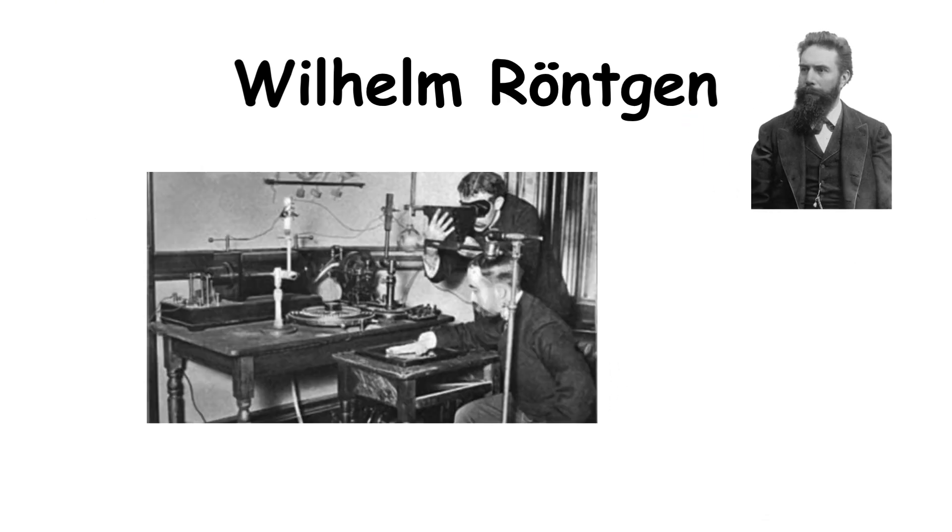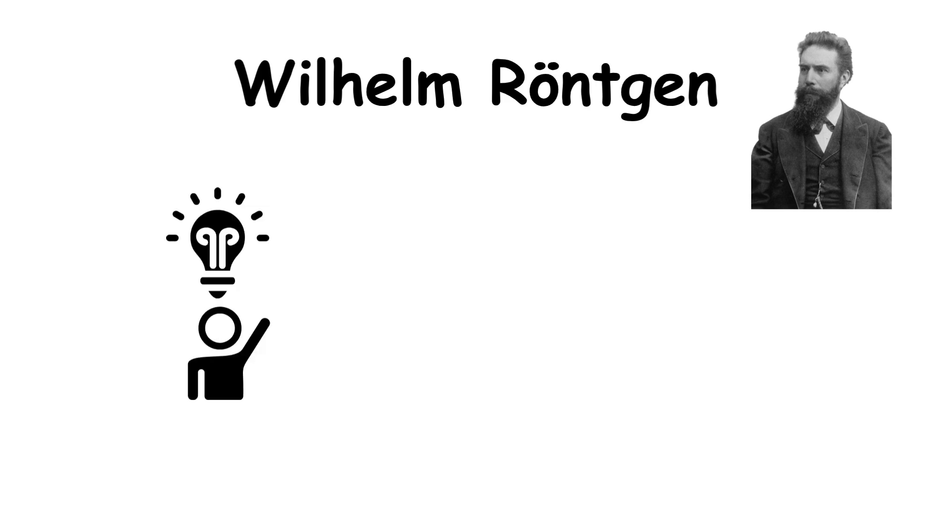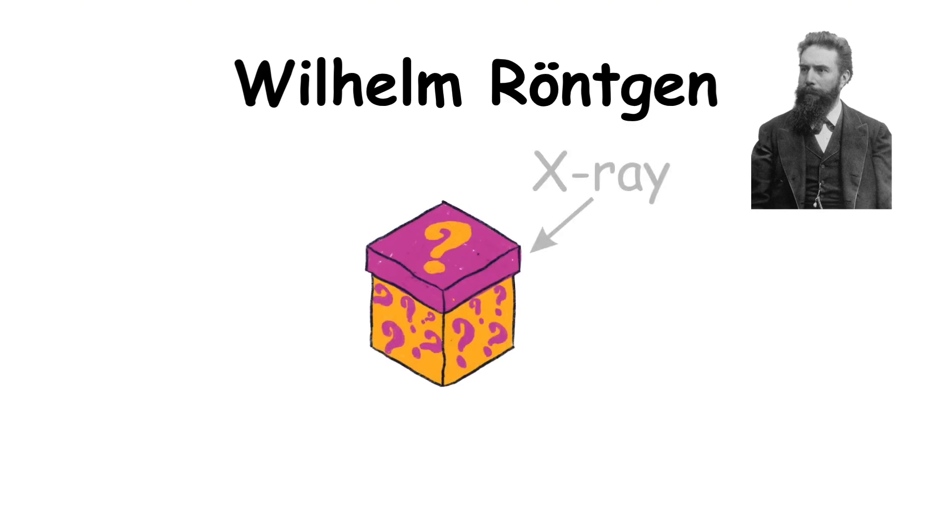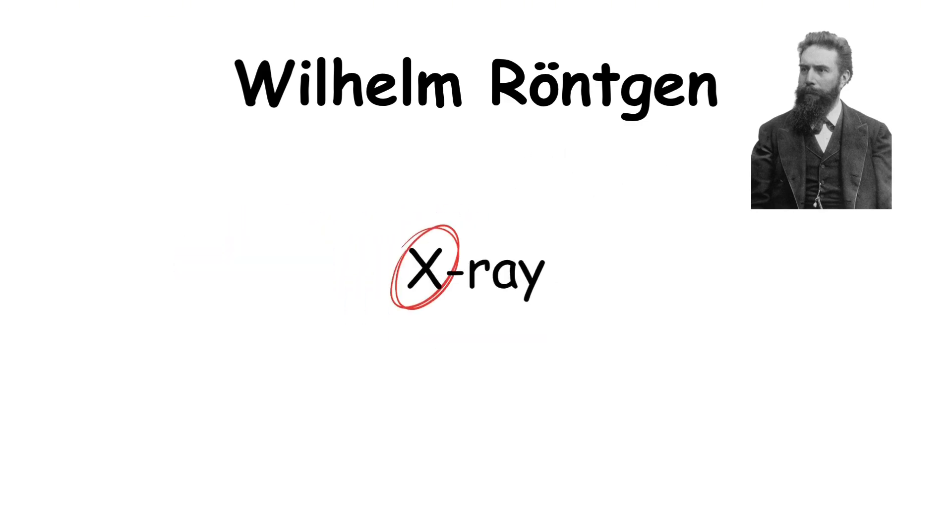While experimenting with cathode rays, Röntgen noticed a strange glow coming from a screen. This led him to realize he had uncovered a new type of radiation, which he called X-rays, X for unknown.